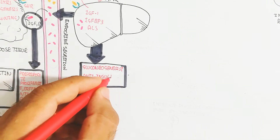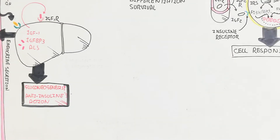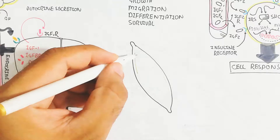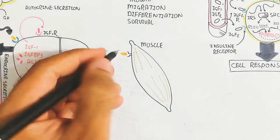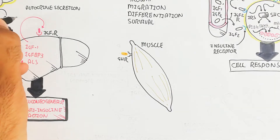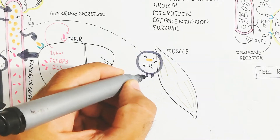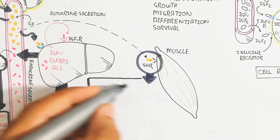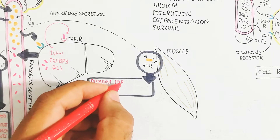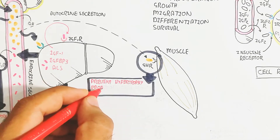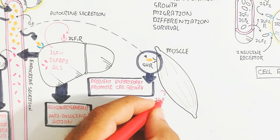Growth hormone decreases adipose tissue and increases browning. In the liver, growth hormone increases gluconeogenesis and has an anti-insulin action. Insulin works for glycogenesis, not gluconeogenesis or glycogenolysis. Gluconeogenesis means the production of glucose from glycogen or from fat.